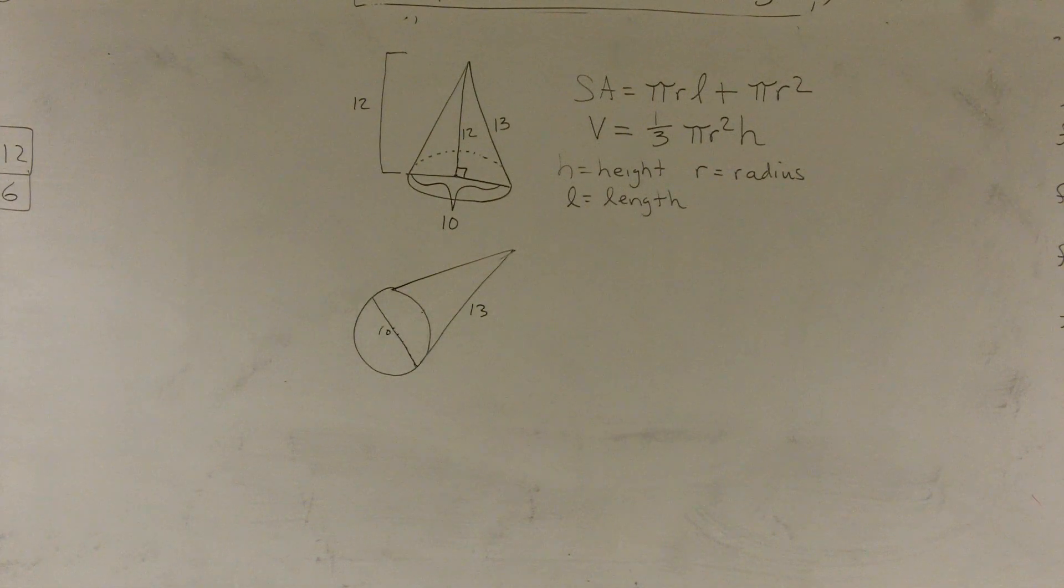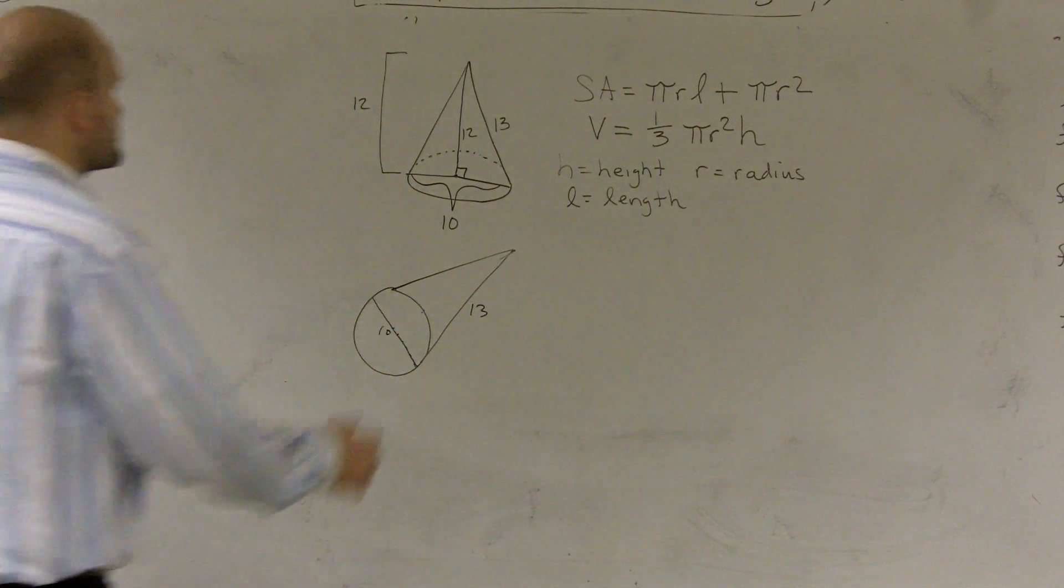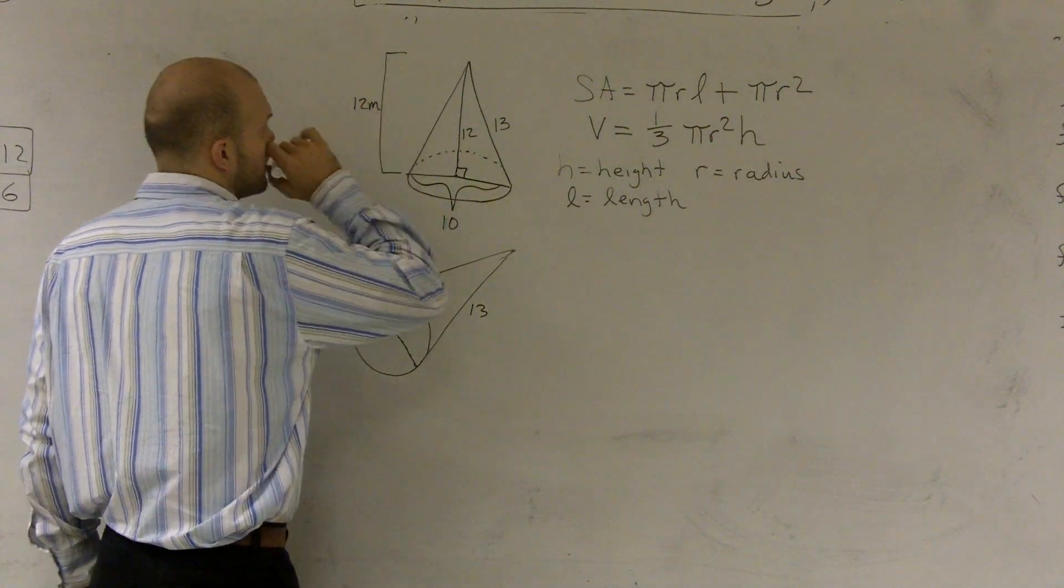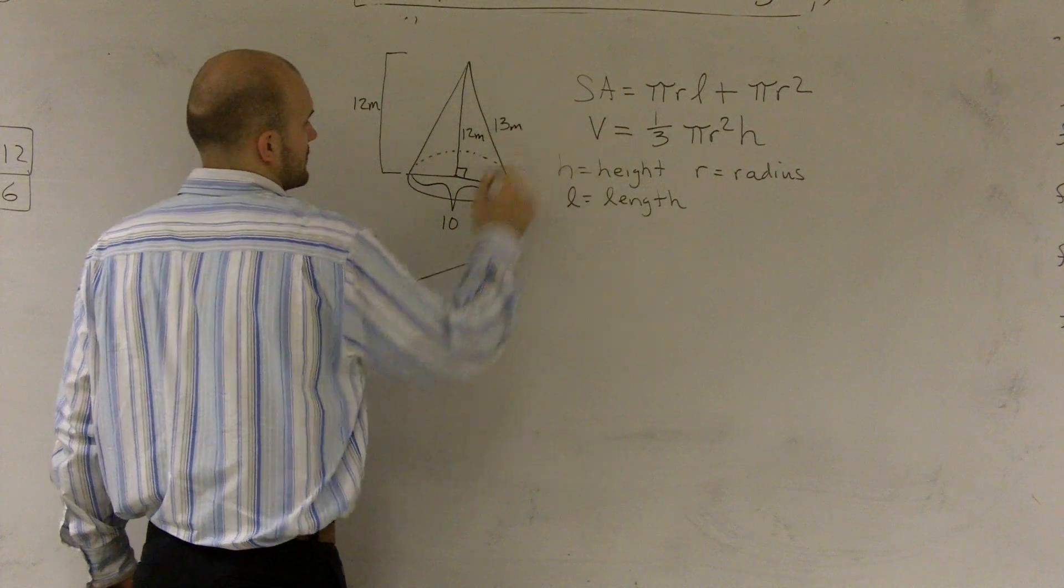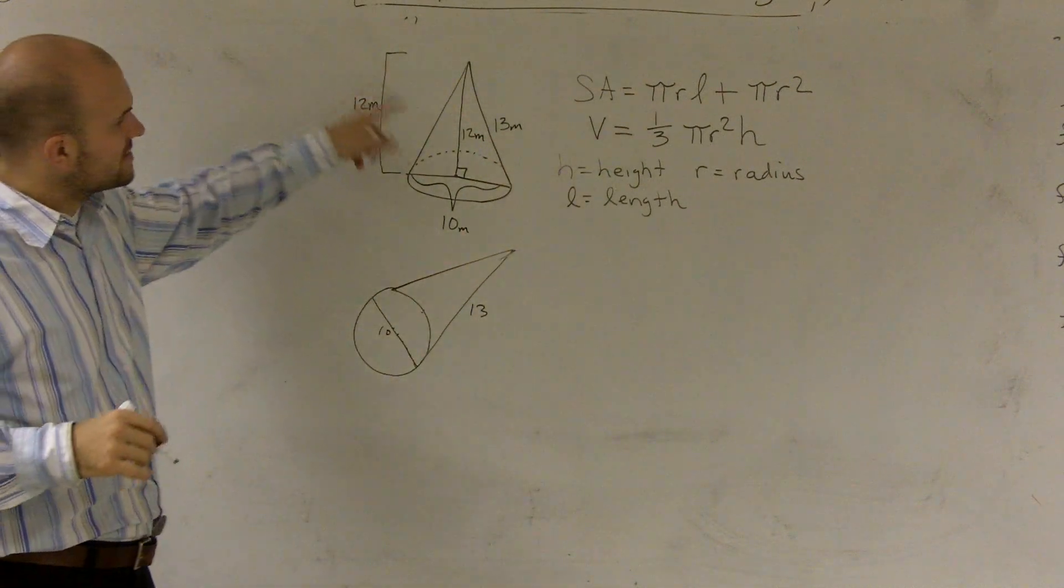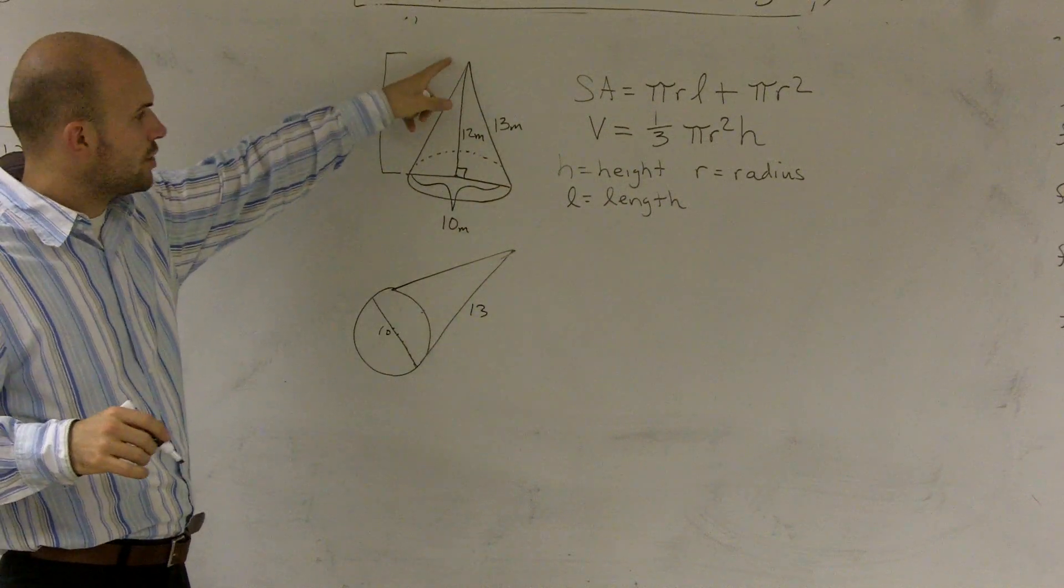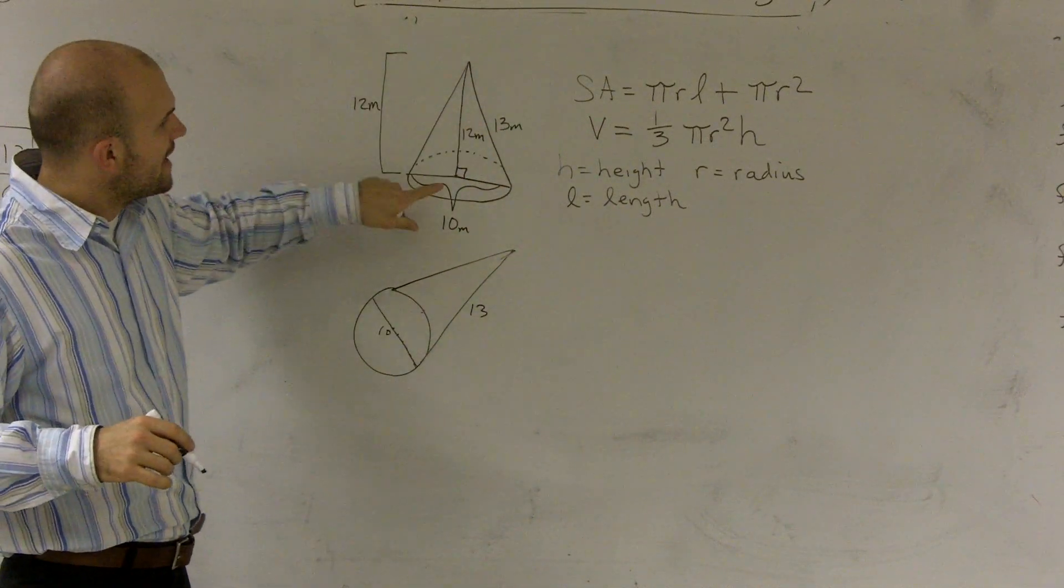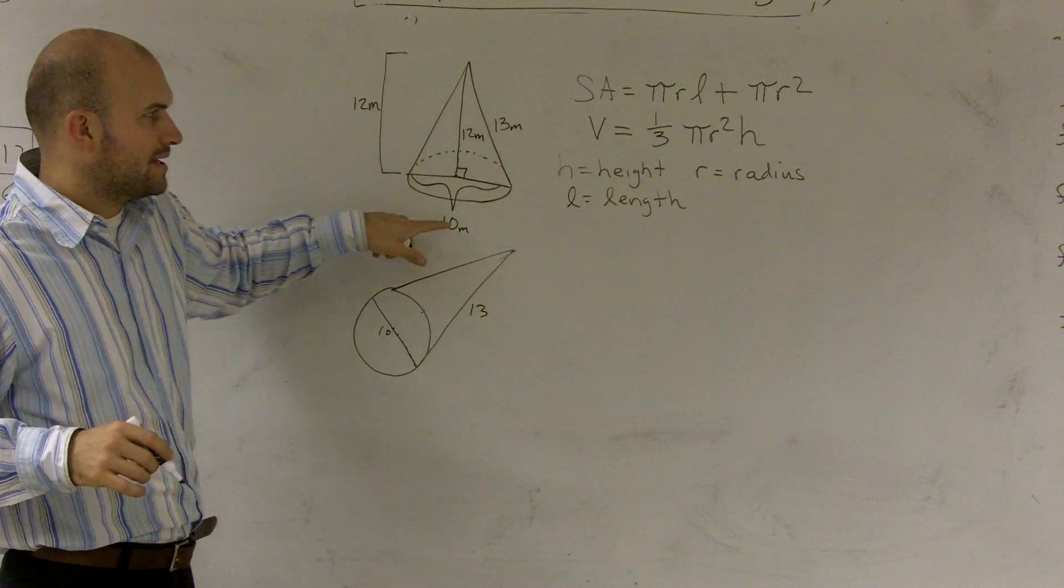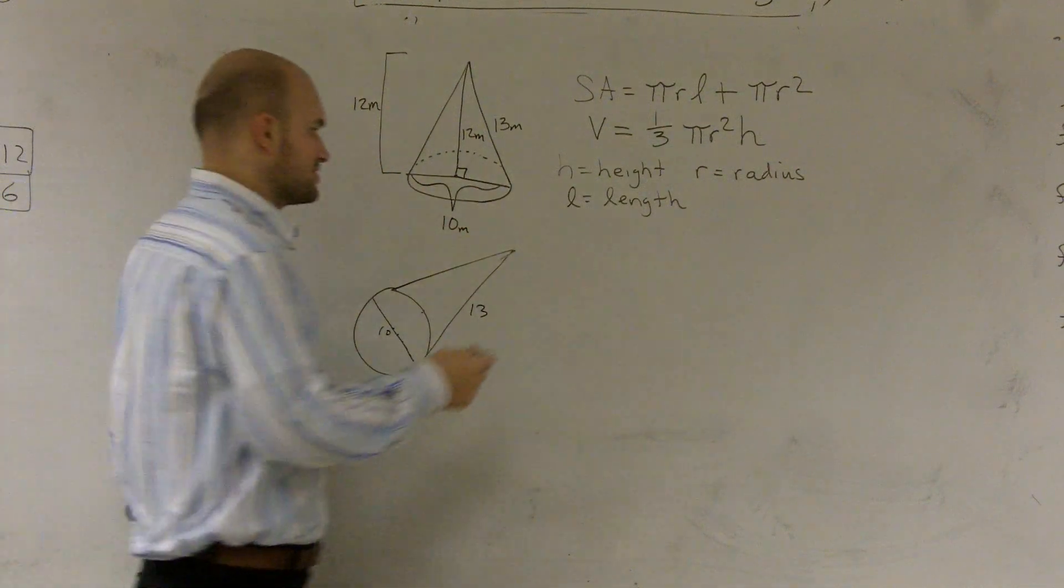We're dealing with meters. So height is 12 meters. The distance from the base to the tip of the cone is 13 meters, and the diameter is 10 meters.